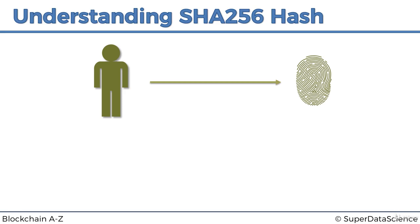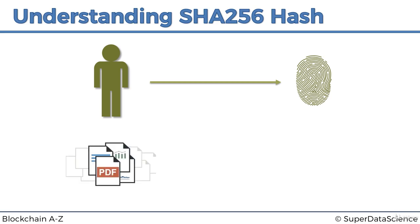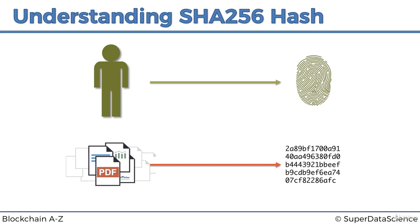What if we could take the same principle and apply it to digital documents? What if we could come up with a sort of fingerprint that would identify these documents for us? Such a fingerprint exists — it's called the SHA-256 hash. The algorithm behind SHA-256 was developed by the NSA.